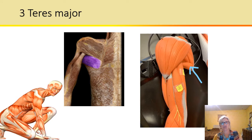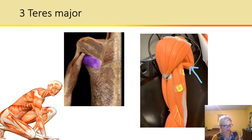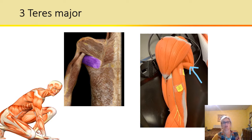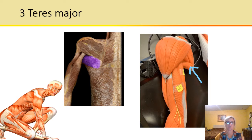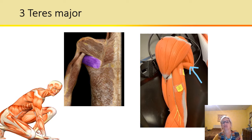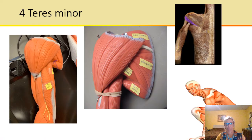All right, so here we have the teres major — you'll also have a teres minor. Teres major means the greater rounded muscle. So this adducts the arm — adduction, add them together — medially rotates the arm, and assists as one of the muscles that helps in arm extension.